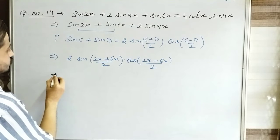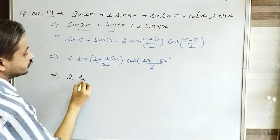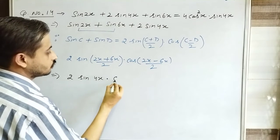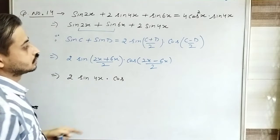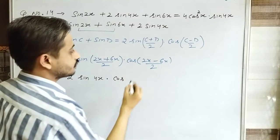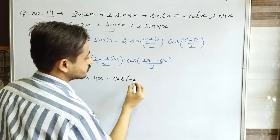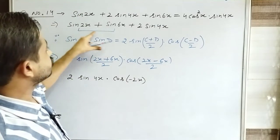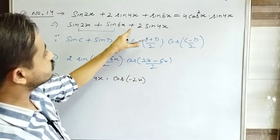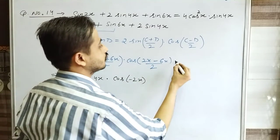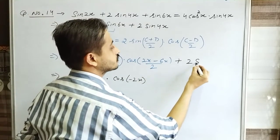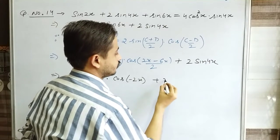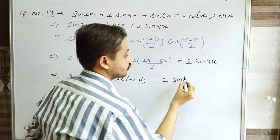It becomes 2sin(8x/2) = 2sin4x, into cos(2x-6x) = cos(-4x/2) = cos(-2x). The third term was not used in the identity, so copy it as it is: 2sin4x.